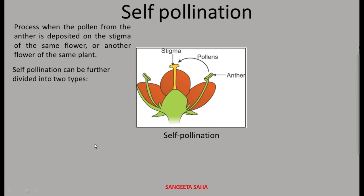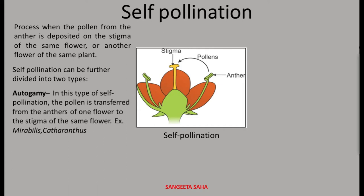Self-pollination can further be divided into two types. One is autogamy. Autogamy means when the pollen is transferred from the anther of one flower to the stigma of the same flower. It is basically found in Mirabilis and Catharanthus.